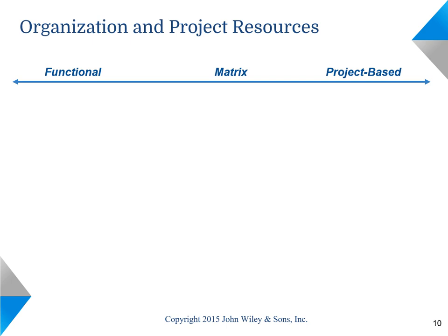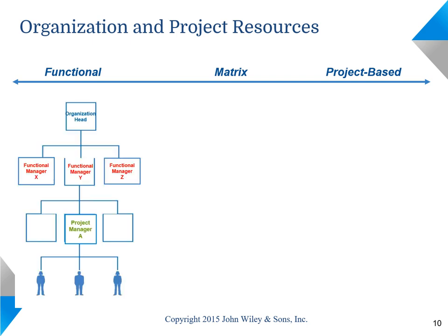There are three types of organizational structure as they relate to projects. On one end of the spectrum, we have the functional organization, where functional managers have control of all resources. A project manager would be reporting to one of the functional managers, while other project staff members are borrowed from other functional managers. Functions may be areas such as hosting, telecommunication, database, support and testing, or cybersecurity.